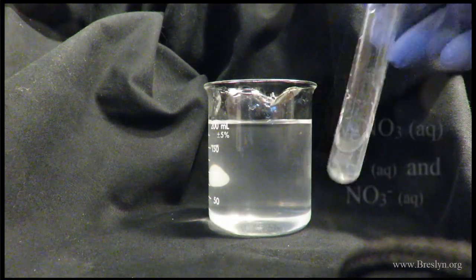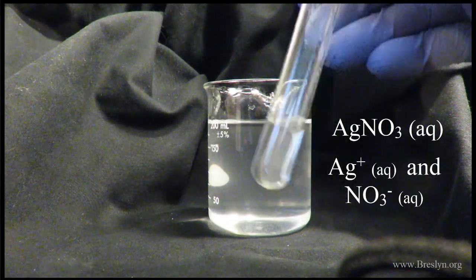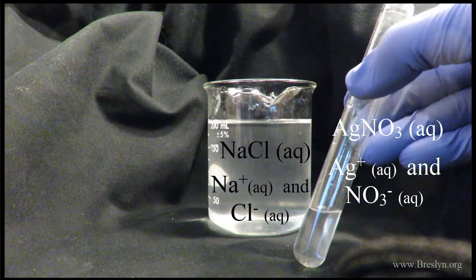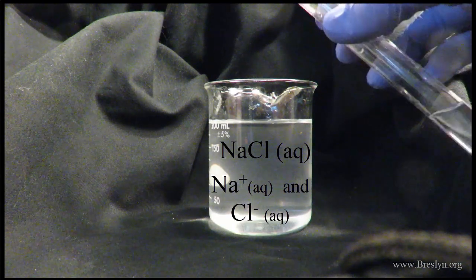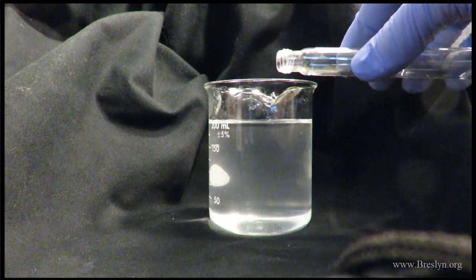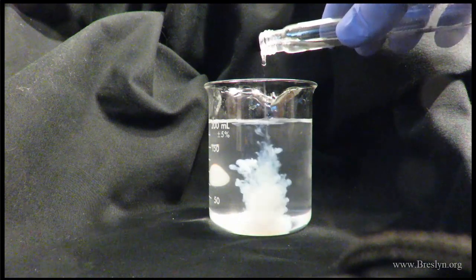The test tube contains aqueous AgNO3, a clear solution. In the beaker is the NaCl aqueous solution. We're going to pour the silver nitrate into the beaker. Watch what happens.